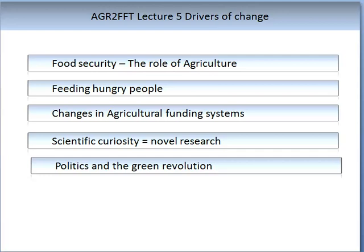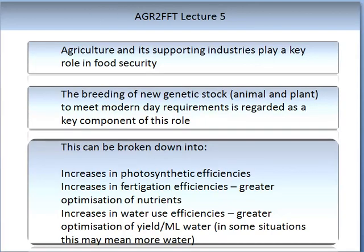The Green Revolution is scattered with stories of politics. Some of these politics enabled the Green Revolution to occur, but others also slowed it down, and in some countries the uptake was slow due to politics. When we look at the Green Revolution from a security perspective, agriculture and its supporting industries can play a key role in food security. The breeding of new genetic stock — animals and plants — has been enabled to meet modern-day requirements. Food security can be broken down into increased efficiencies in photosynthesis, increases in fertigation efficiencies, greater optimisation of applied nutrients, and increases in water use efficiency — meaning a greater yield for every megalitre of water applied.